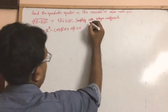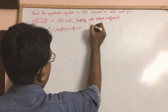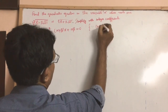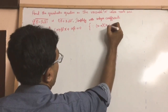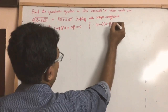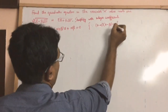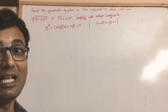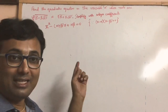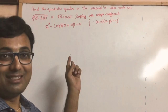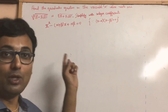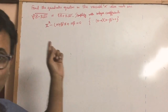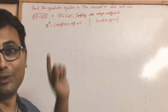This is because (x minus alpha) times (x minus beta) equals 0. If we simplify this we get x squared minus the sum of the roots times x plus the product of the roots equals 0.